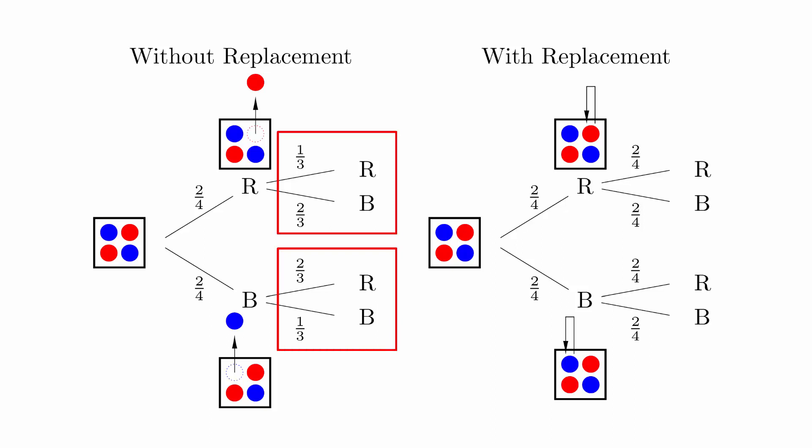Notice that if we do not replace the ball, the probability trees for the second event are different. But if we do replace the ball, the probability trees are the same.